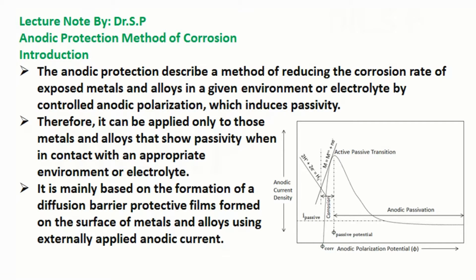In this tutorial we will discuss about anodic protection method of corrosion. Anodic protection describes a method of reducing the corrosion rate of exposed metals and alloys in a given environment or electrolyte by controlled anodic polarization, which induces passivity.